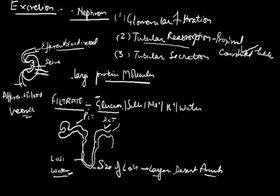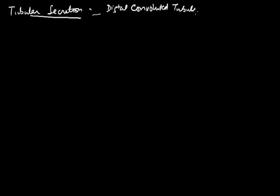The next step, tubular secretion, occurs mainly in the distal convoluted tubule and collecting duct, the last part of nephron. Different parts of the nephron contribute in various ways in formation of urine. The excess additional waste from the blood streams into the filtrate by active transport. This is how, in brief, urine is formed by a single nephron.